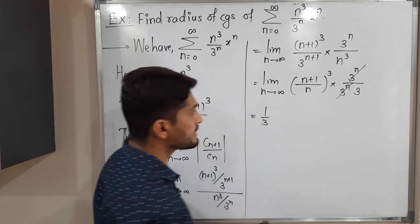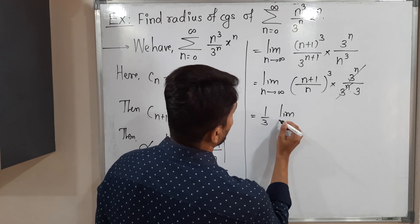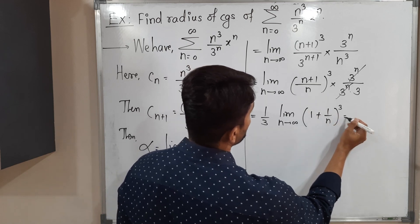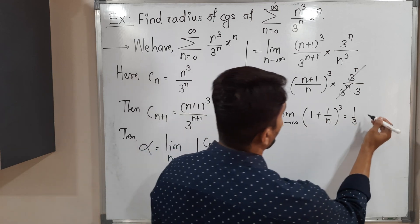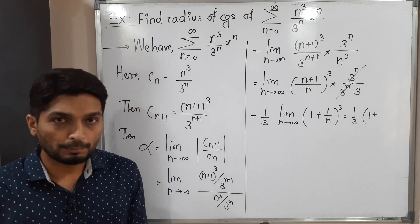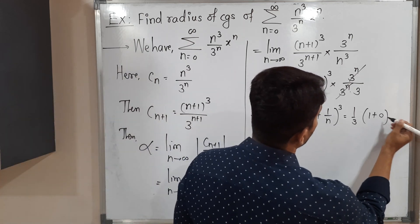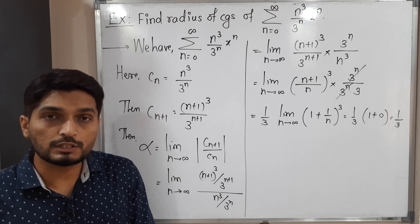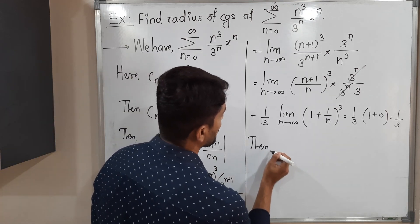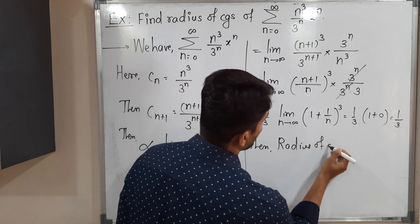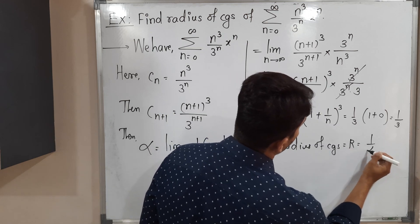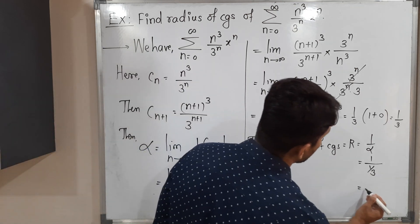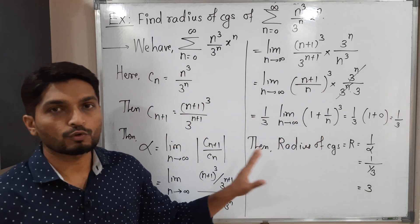We can take 1/3 outside since it is independent of n. So we have (1/3) times the limit as n tends to infinity of (1 + 1/n)³. Dividing separately: n/n gives 1, and 1/n tends to 0 as n tends to infinity. So the limit equals (1/3) times 1³, giving α equals 1/3. The radius of convergence R equals 1/α equals 1/(1/3) equals 3. So 3 is the radius of convergence of this power series.